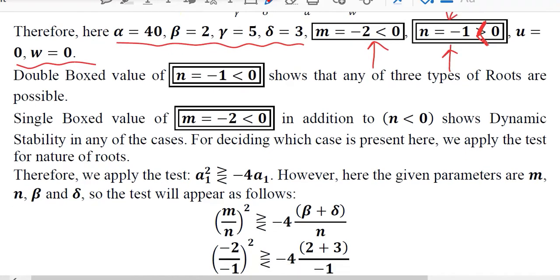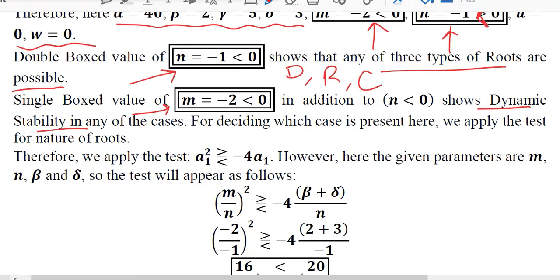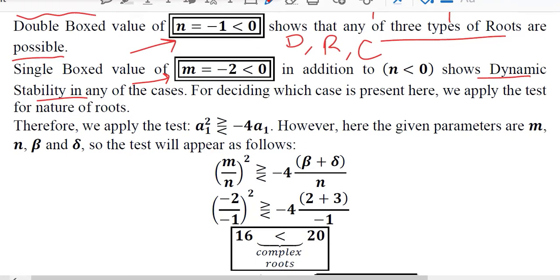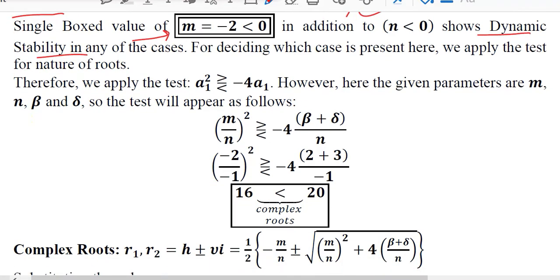So when n is negative all three possible cases can be there. That is distinct real root case and repeated real root case and complex root case. So either of these can happen and then if m is negative it means that the dynamic stability will be present.